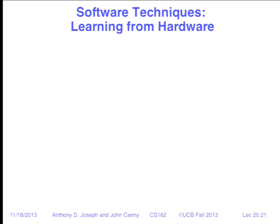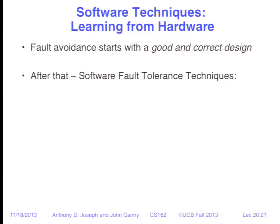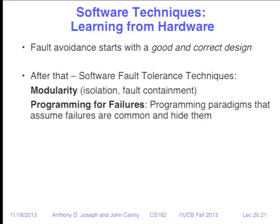We can learn from hardware design techniques from a software standpoint. Fault avoidance starts with a good and correct design — this is why we push you to come up with a design before you rush to implement, because it's easier to understand algorithms in a design than in raw code. Software fault tolerance techniques include modularity, which gives isolation and fault containment since each module can sanity check inputs and outputs. Programming for failures — like MapReduce, which assumes failures are common and automatically hides them — is really good. Design diversity, like what Airbus did: aileron control software was developed by two independent teams given the same specification, producing different code that does the same thing, to detect logic errors.